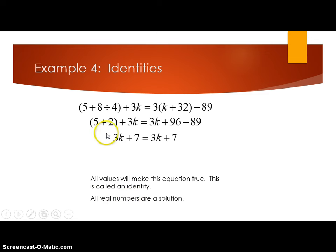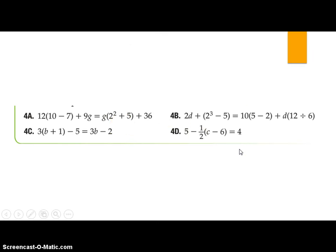And this situation here is called an identity, very similar to the 5 equals 5 that we had in section 3. That the number equals itself was its identity. Well, this expression equals this expression is also an identity. Let's move on to example, actually, let's try some.